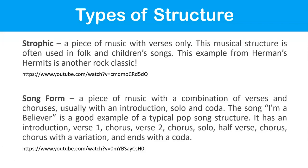Strophic is a piece of music with verses only. This musical structure is often used in folk and children's songs. An example is Herman's Hermits' I'm Henry VIII I Am. Other folk songs like Wild Colonial Boy and Ten Green Bottles also use strophic form — it's just verse, verse, verse, with the same melody but different lyrics each time.